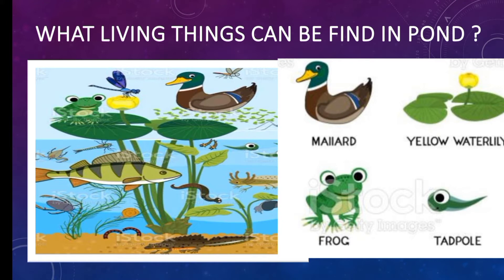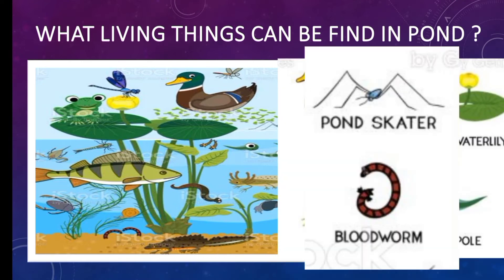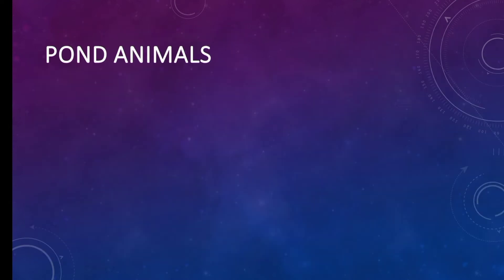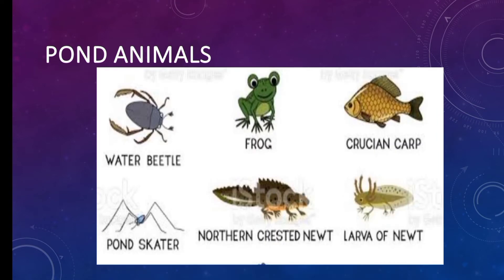Living things that can be found in ponds include: mallard duck, yellow water lilies, frog, tadpoles, pond skater, and blood worms. Pond animals we can find include: water beetle, frog, crayfish, carp, pond skater, and northern crested newt.